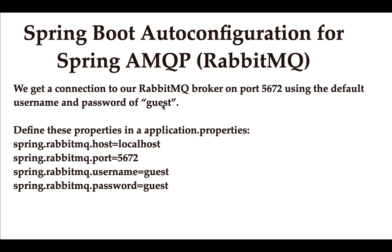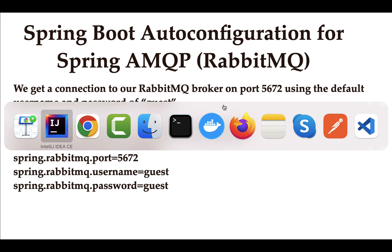Remember, these default values work when you install RabbitMQ locally in a development environment. If your RabbitMQ broker is running on a different machine, you have to provide these properties and supply that machine's IP address or hostname. So whenever you deploy your RabbitMQ broker to production or any different environment, make sure to provide the correct hostname, port, username, and password as per the environment. These defaults only work for local development.